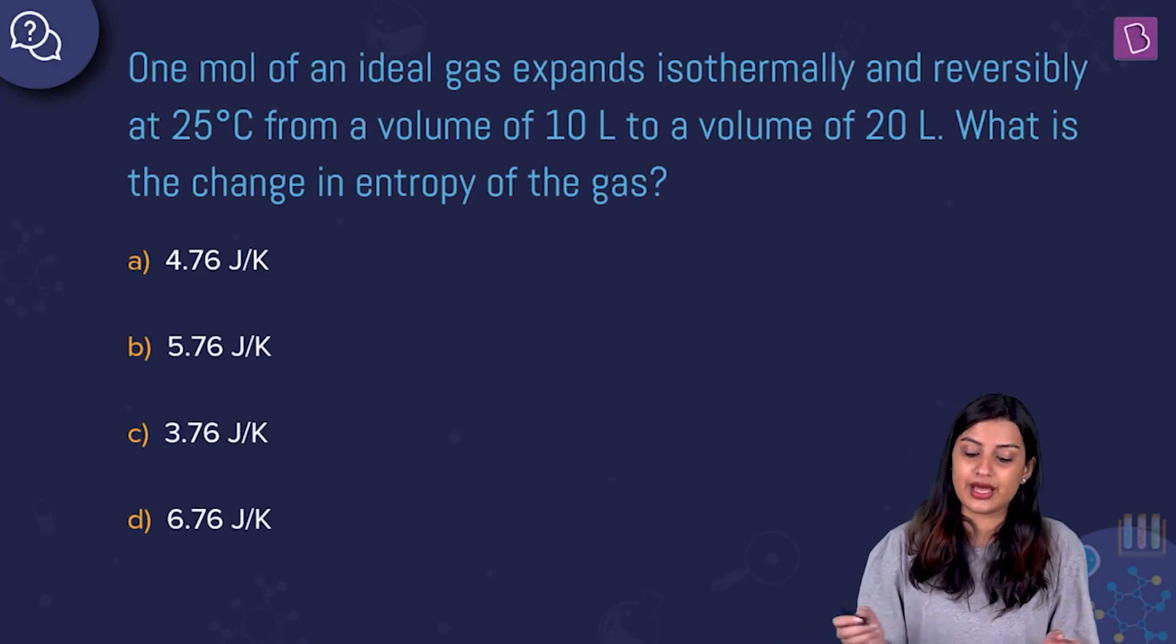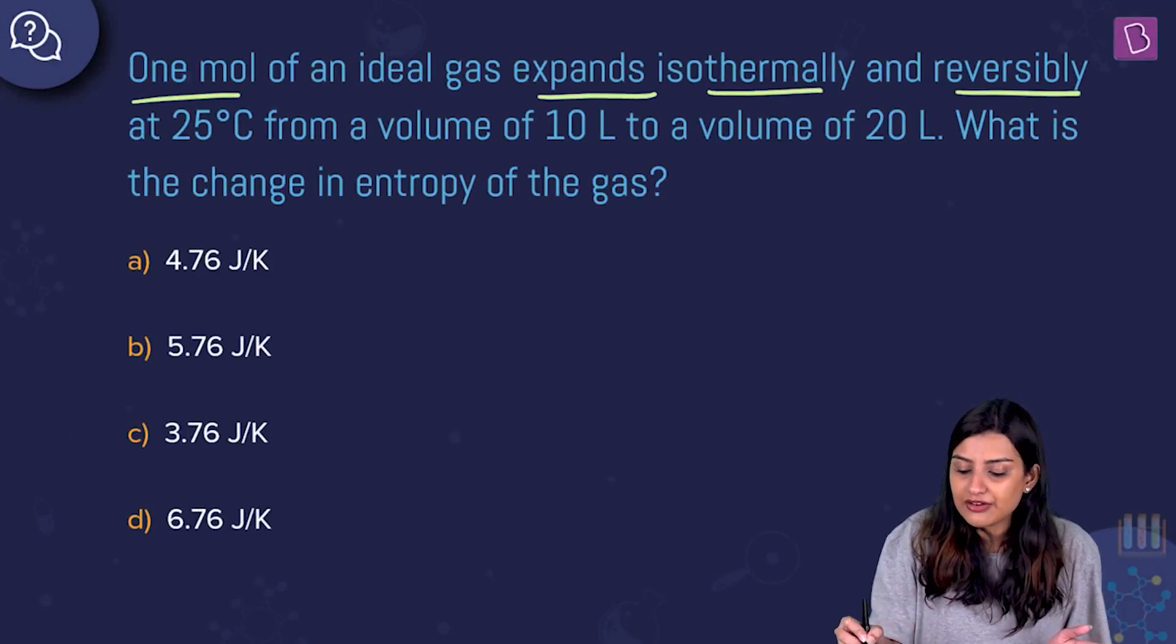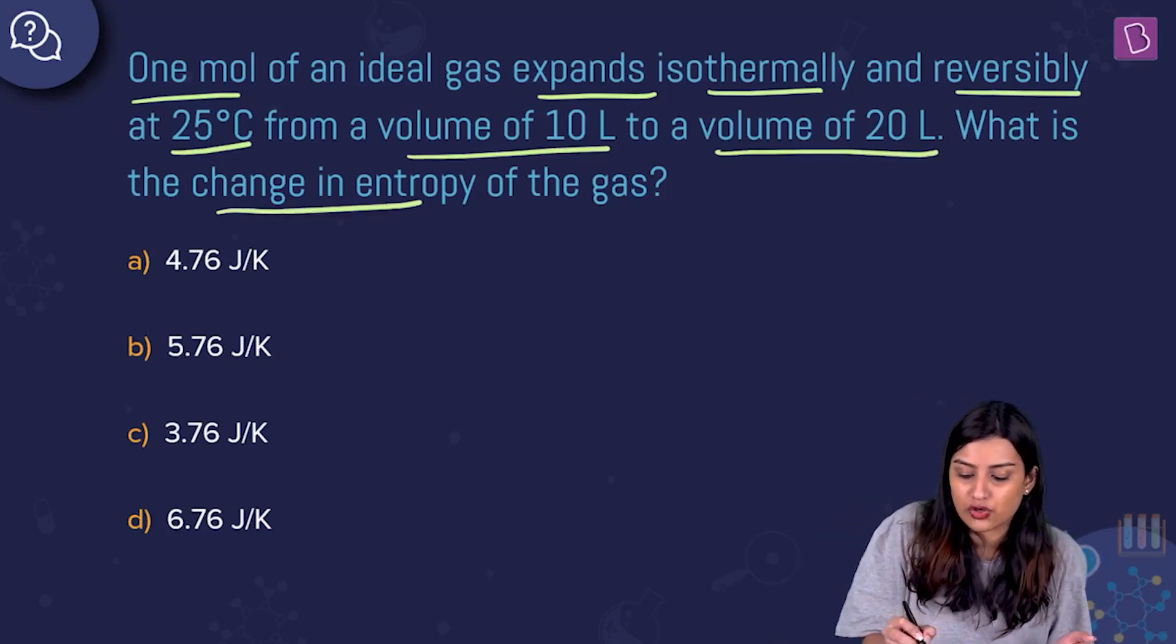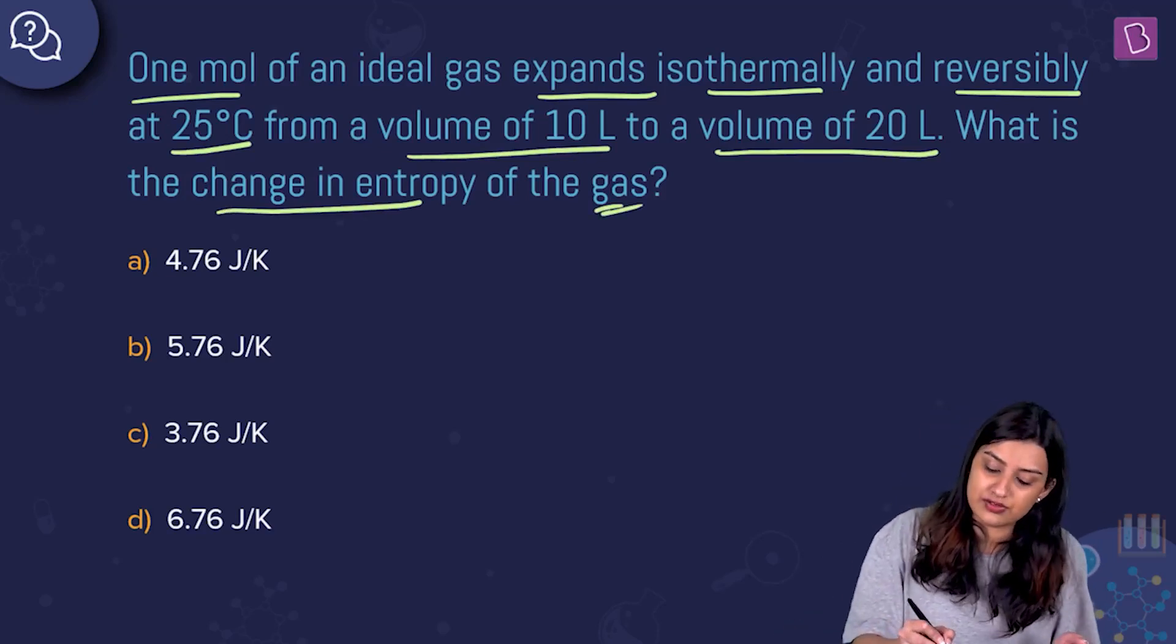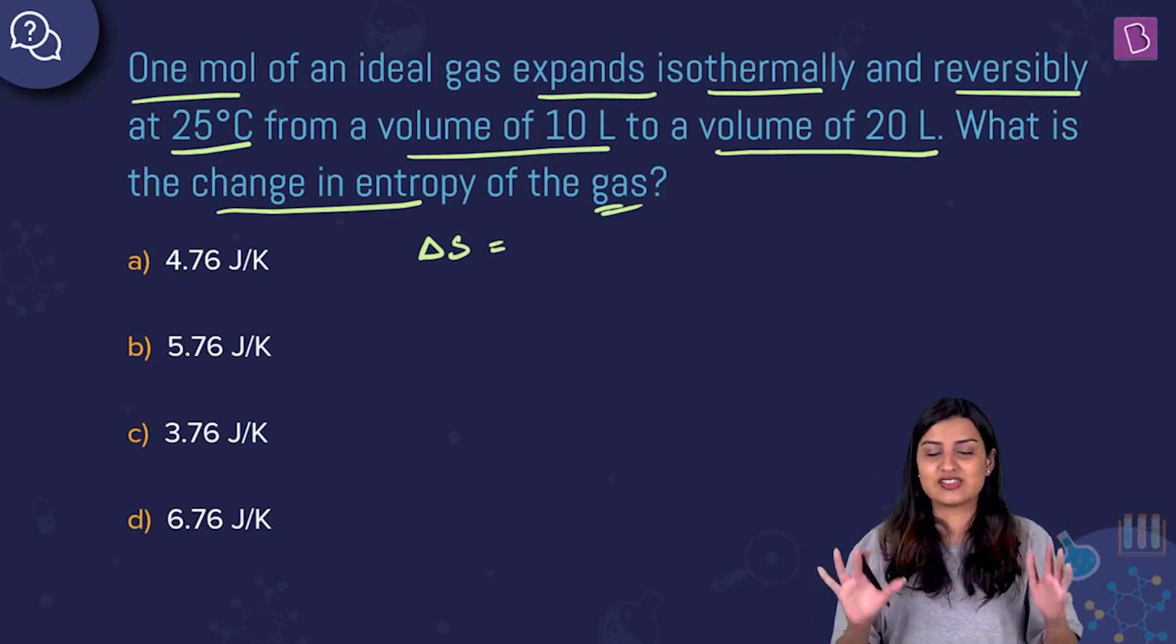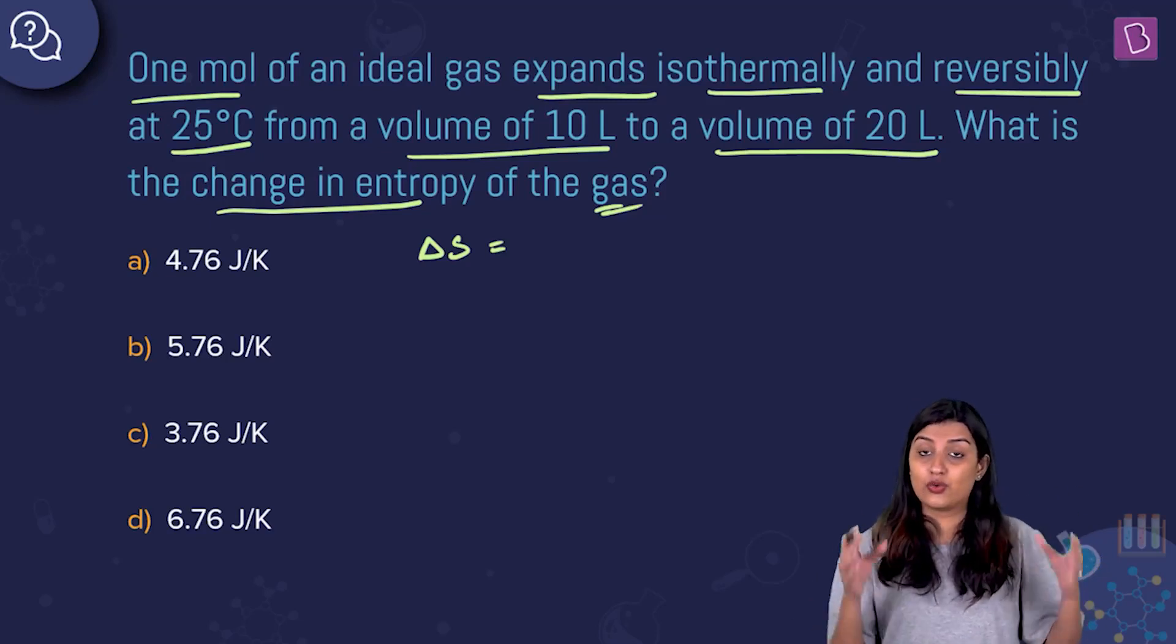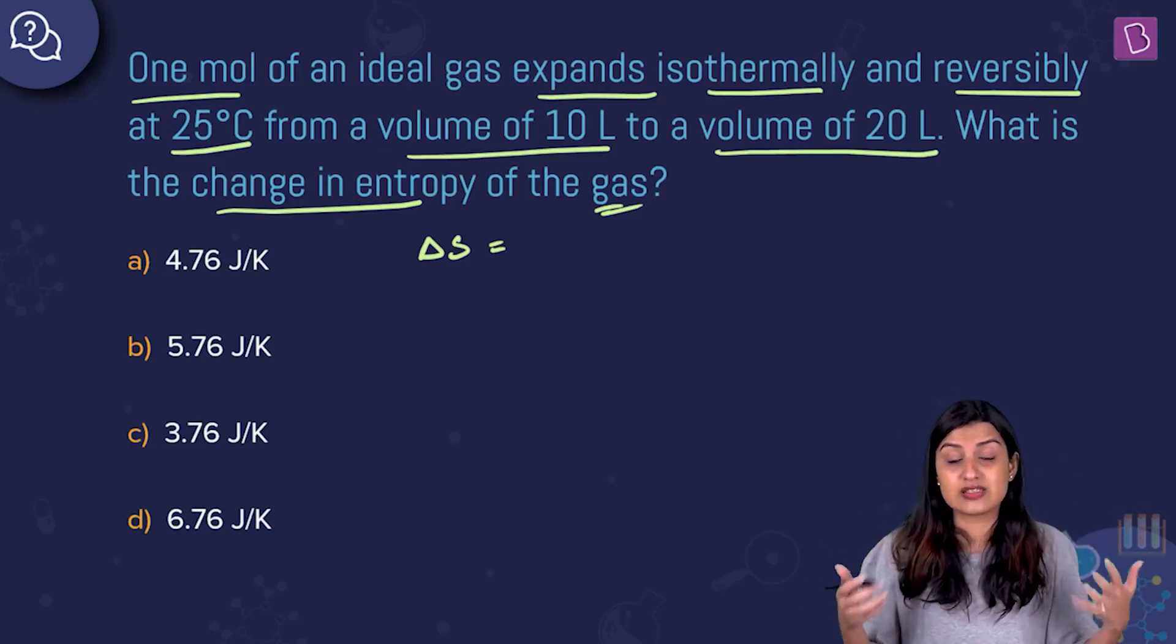One mole of an ideal gas expands isothermally and reversibly at 25 degrees Celsius from a volume of 10 liters to a volume of 20 liters. What is the change in entropy of the gas? They're asking us for the value of delta S. This is an isothermal reversible expansion. The question itself is such a giveaway. You can directly go ahead and apply the formula.